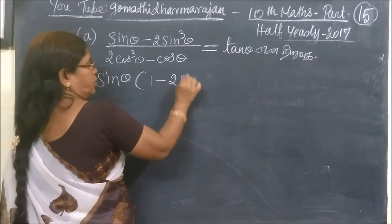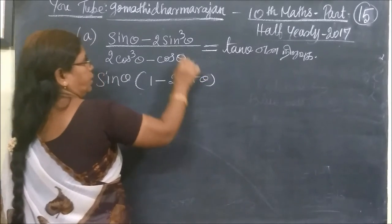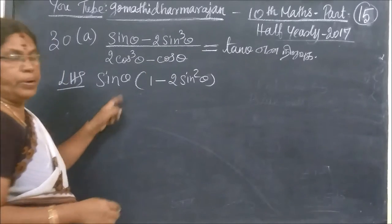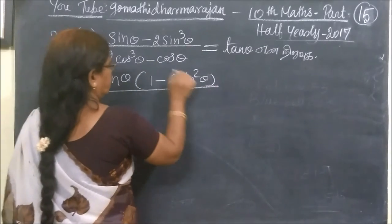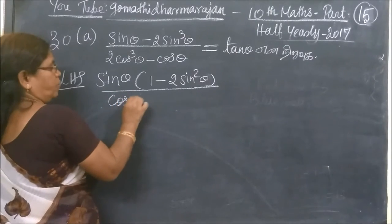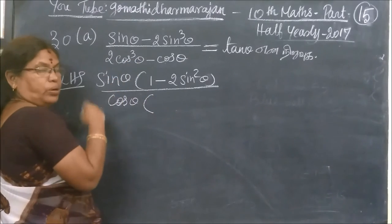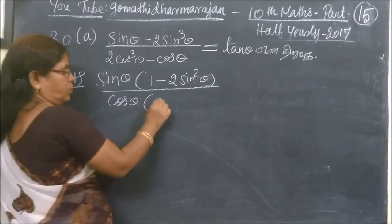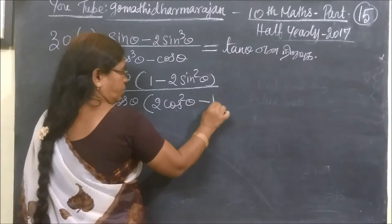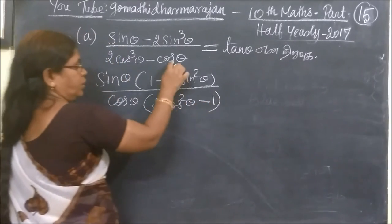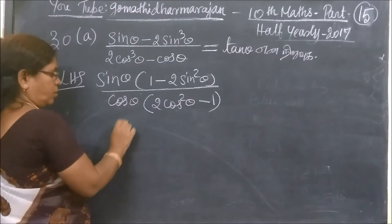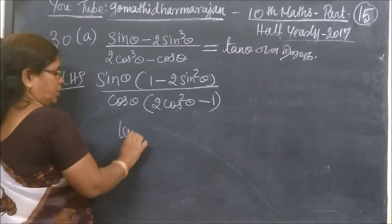Minus 2 sin squared theta. Why is this cube? 1 sin theta is common, so this is 1. Cos theta is common — the cube is 1, cos theta is common. So this is 2 cos theta minus 1. Sin theta by cos theta is 1.